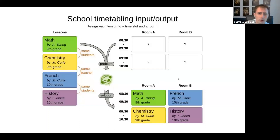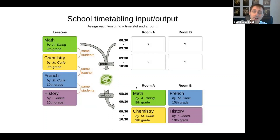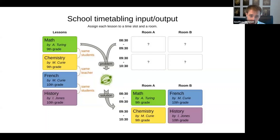You might think: can't we solve this with a decision table? The problem is the first lesson can basically fit anywhere. If you have four lessons, you have a one-in-four chance of placing it correctly; if you have 400 lessons, a one-in-400 chance. The second lesson has one-in-399 chances. Decision tables don't work for this — you can't place one lesson at a time; they all influence each other.